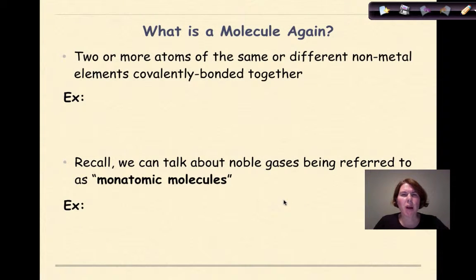A compound is considered more stable if it has its full octet. Let's look at the definition of a molecule again. So a molecule is defined as two or more atoms of the same or different nonmetal elements covalently bonded together because remember when we see the word molecule we think nonmetals and when we think nonmetals we think covalent bonding and sharing of valence electrons.